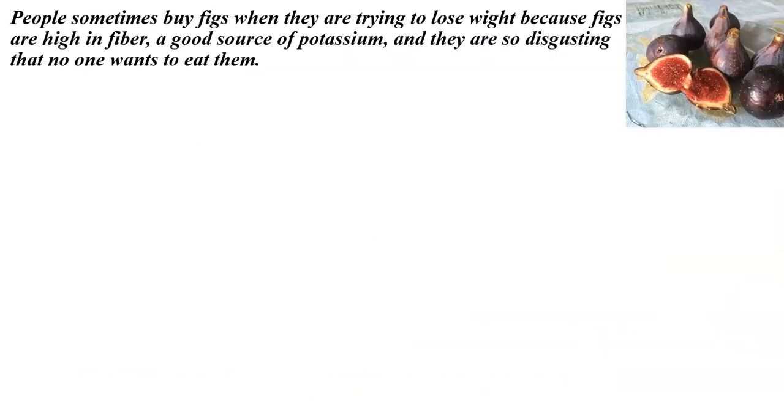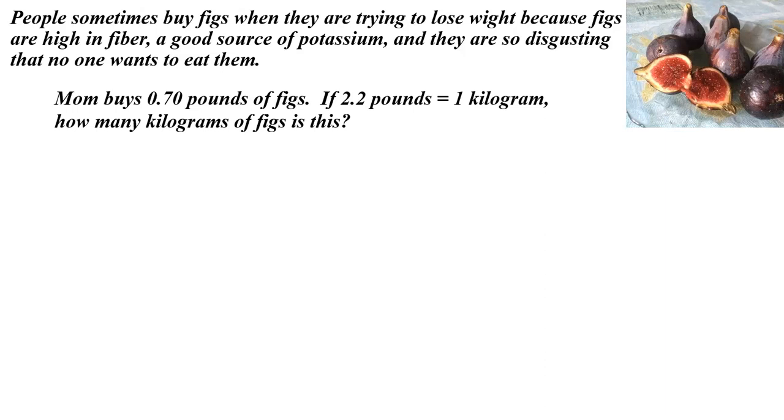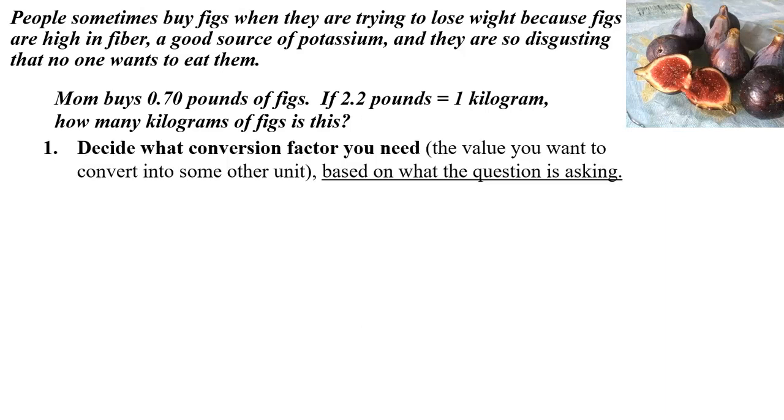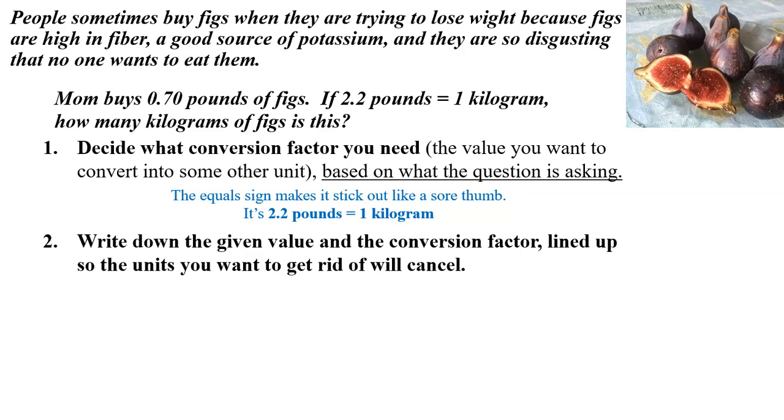All right. So one last one. People sometimes buy figs when they're trying to lose weight because figs are high in fiber, they're a good source of potassium, and they're so disgusting that no one wants to eat them. So mom buys 0.70 pounds of figs. If 2.2 pounds equals 1 kilogram, how many kilograms of figs is this? All right. So step one is still decide what conversion factor you need. Now the flashing red light on this one as far as what the conversion factor is is that equal sign. If there's an equal sign there, it's almost certainly the conversion factor. And it is, in fact, in this case. All right. Step two. Write down the given value and the conversion factor lined up so the units you want to get rid of will cancel. So there's the given value. There's the conversion factor. And then we just move on to the last one.